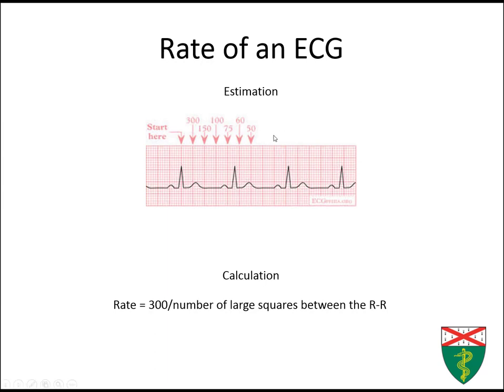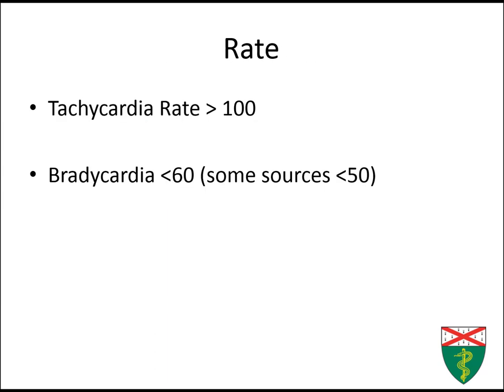With the ECGs used here at Yale, there tends to be a rhythm strip at the bottom. If you count the number of QRS complexes and multiply by six, this gives you the rate for 60 seconds, since the rhythm strip is 10 seconds long. Tachycardia is a rate greater than 100 beats per minute, and bradycardia is usually less than 60, though some sources say less than 50.